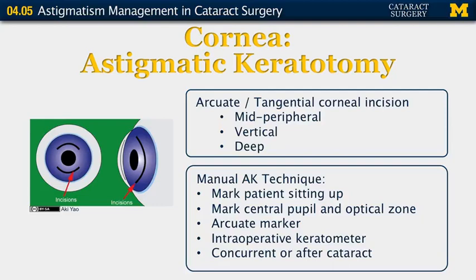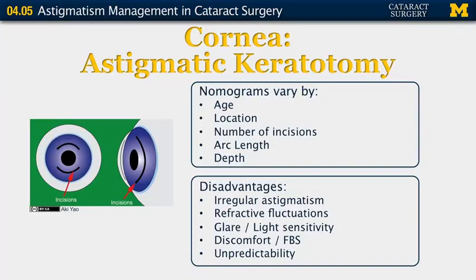Astigmatic keratotomy is another procedure that can be added with cataract surgery to affect astigmatism. These are arcuate or tangential corneal incisions made in the mid-periphery of the cornea — vertical incisions meant to be rather deep. The technique requires marking the patient while sitting up to have a good measure of the axis, marking both the central pupil and optical zone with a specialized AK marker, and using an intraoperative keratometer to adjust as you go. This procedure can be performed concurrently with or after cataract surgery. Astigmatic keratotomy is guided by a nomogram that varies by patient age, location of astigmatism, number of incisions, arc length, and depth of cut — all of which alter the amount of astigmatism corrected.